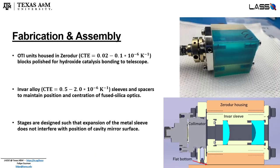The materials used to fabricate the housings of the input stage are Zerodur glass ceramic, which forms the outer housing of the input stage. One side of this Zerodur block is polished for hydroxide catalysis bonding. Inside of this Zerodur housing, we have an Invar sleeve, which holds the fused silica optics in place and maintains their position relative to one another.